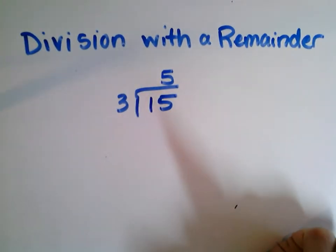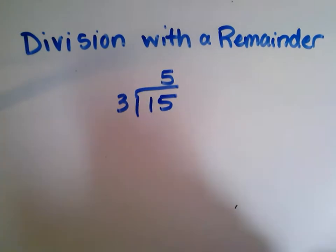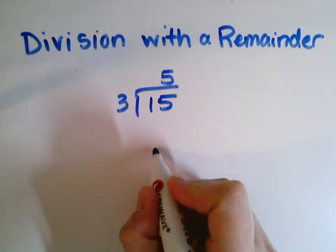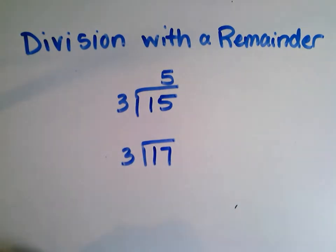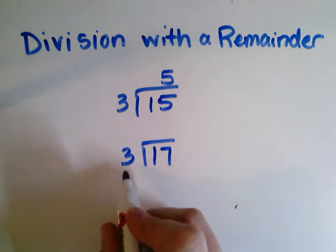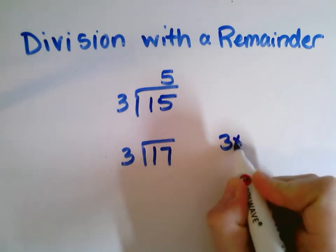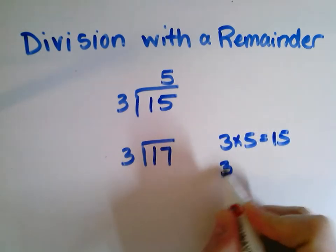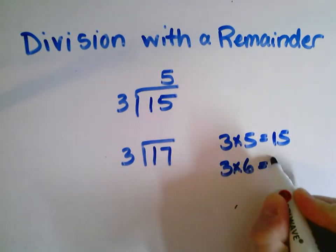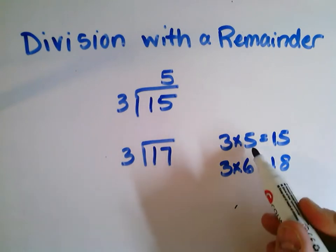But sometimes we need to divide numbers that don't divide evenly. Like if I had the problem 17 divided by 3 — wait a second, I don't know anything times 3 that equals 17. 3 times 5 is 15, 3 times 6 is 18. None of these are going to be 17. I can't use 5, I can't use 6.